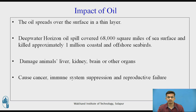Next, we will see the impact of oil on the environment. Oil spreads over the water surface in a thin layer. The Deepwater Horizon oil spill, considered one of the most disastrous oil spills, covered 68,000 square miles of sea surface and killed approximately one million coastal and offshore seabirds. Oil damages animals' liver, kidney, brain, and other organs. Oil contamination can make water unsuitable for irrigation and damage how water treatment plants work. Oil also causes cancer, immune system suppression, and reproductive failures.